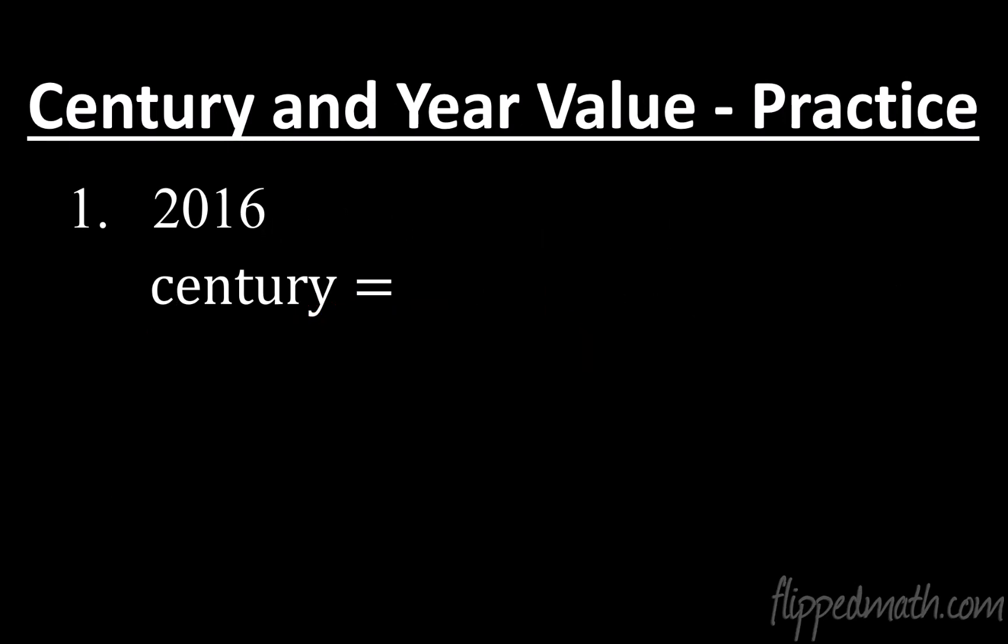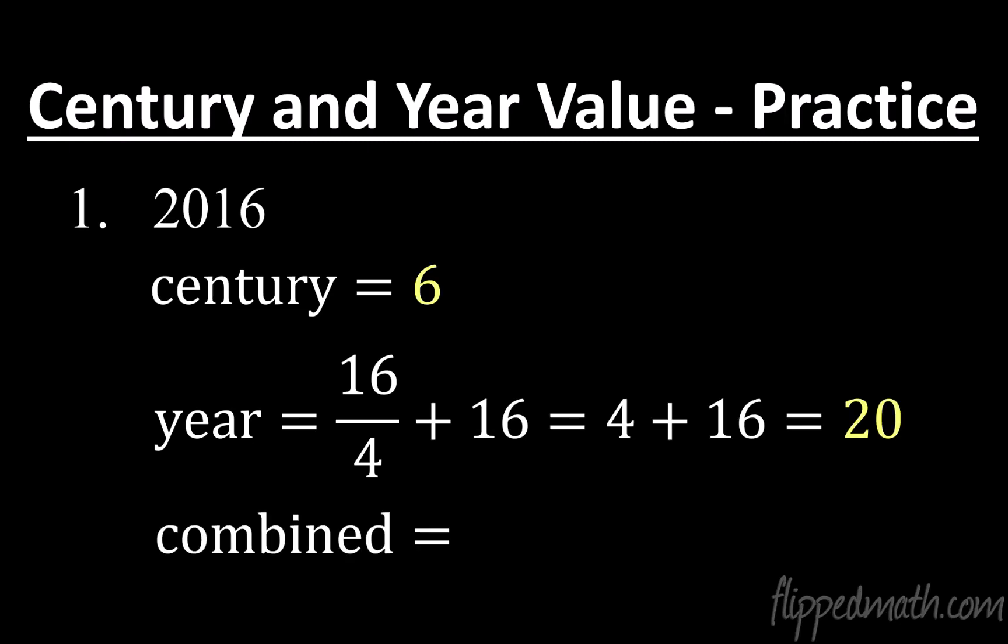Let's say to take the year 2016. So if we had 2016, the century value for 2016 is a six. That's just something we have to have memorized. Now, if we're talking about the year value, what we do is we take the last two digits of the year 2016, divide by four, and then we add those last two digits of 16, and that's where this comes from. So now what does this equal? 16 divided by four is just four. Adding 16, we get 20.